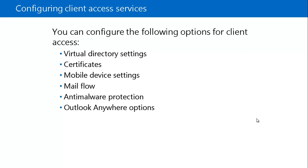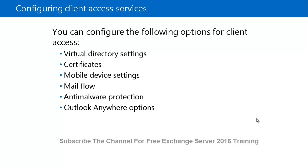Next is Mail Flow. Administrators can use the Exchange Admin Center to manage the Transport Component residing inside the Client Access Server. This includes configuring Delivery Reports, Accepted Domains, and Send and Receive Connectors. Exchange Server 2016 also includes malware filtering, and the Exchange Admin Center allows you to configure anti-malware filtering options. For Outlook Anywhere, you can configure external and internal hostnames and authentication, though this is not required if you are using MAPI over HTTP.